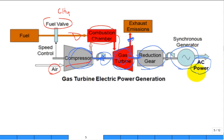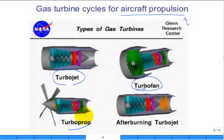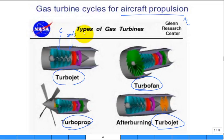You can also understand the Brayton cycle as the basis for propulsion systems. Aircraft propulsion is covered in Chapter 9 — things like the turbojet, turbofan, turboprop, and afterburner. There are two major components: the compressor and the combustor or burner, and then the turbine. In a basic turbojet, the goal is not to produce a lot of shaft power but to keep the exhaust gases at high enough pressure to pass through a nozzle.